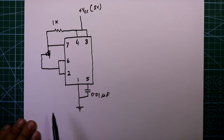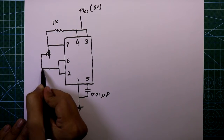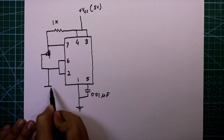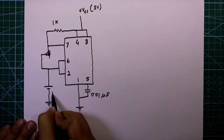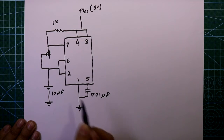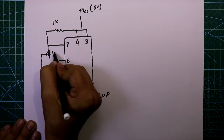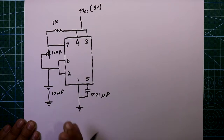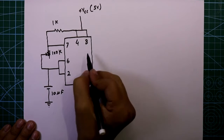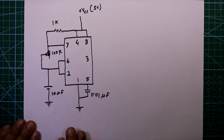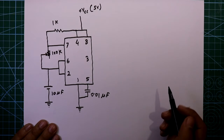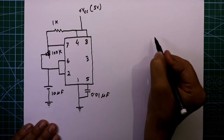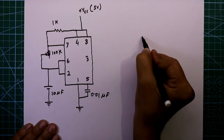will go to pin number 7. Then one capacitor is connected — this will go to ground, the value is 10 microfarad. The potentiometer here is 100 kilohms. For our output to generate ambulance sound, we need two 555 ICs — here is one, we need another.